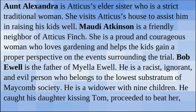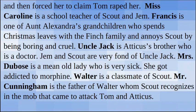Aunt Alexandra is Atticus's elder sister, who is a strict traditional woman. She visits Atticus's house to assist him in raising his kids well. Maudie Atkinson is a friendly neighbor of Atticus Finch. She is a proud and courageous woman who loves gardening and helps the kids gain a proper perspective on the events surrounding the trial. Bob Ewell is the father of Mayella Ewell. He is a racist, ignorant and evil person who belongs to the lowest substratum of Maycomb society. He is a widower with nine children. He caught his daughter kissing Tom, proceeded to beat her and then forced her to claim Tom raped her.